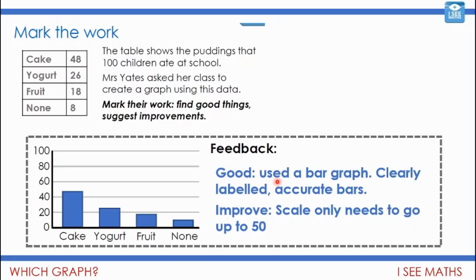The good things: we used a bar graph — that's the right kind of graph — and it's clearly labelled so we can see which pudding it was and how many children. The bars have been marked accurately on the scale. But to improve: the scale doesn't need to go all the way up to a hundred. The bars are quite small and hard to read, so the scale only needs to go up to 50, because the biggest group is 48 children who had cake.